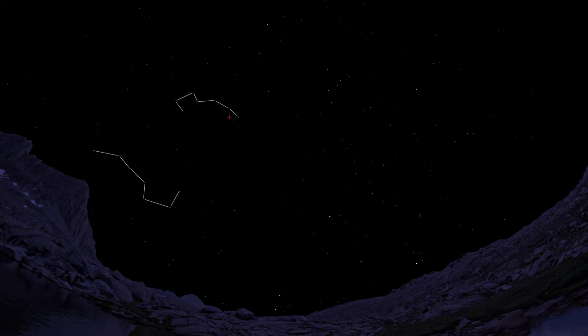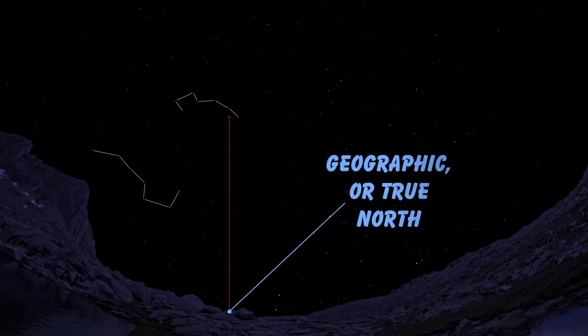Now we're getting close to our goal, finding true north. All you need to do is simply draw an imaginary line straight down from the North Celestial Pole to the horizon. Where this imaginary line reaches the horizon, that is geographic or true north. If you were to travel in a straight line towards this point on the horizon, you will be traveling due north, parallel with all the vertical lines on your topographical maps. And if you were to continue to travel in this direction in a straight line, you would eventually reach the top of the Earth, the North Pole.